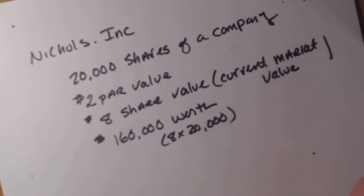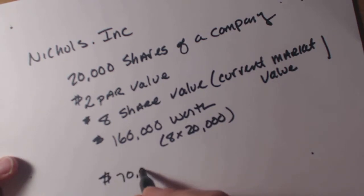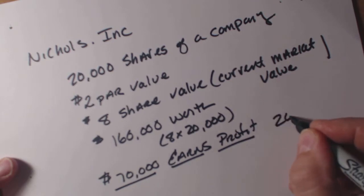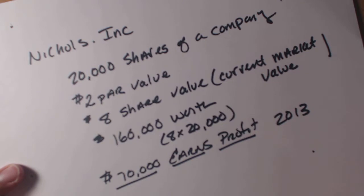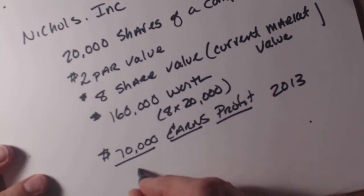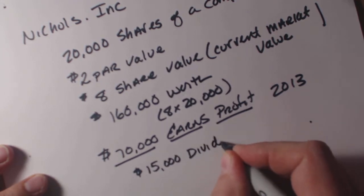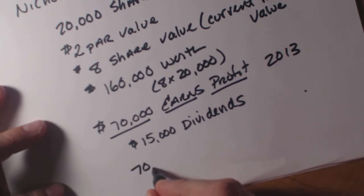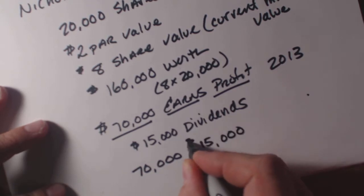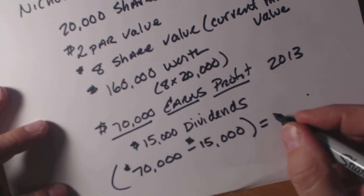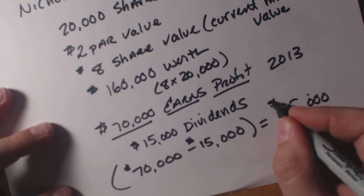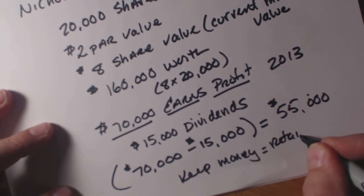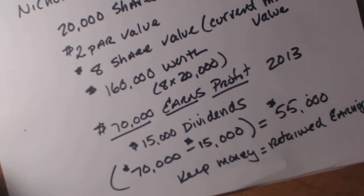The company earns $70,000 this year — that's their profit at the end of 2013. Then the owners wanted to take out $15,000 in dividends, meaning they want to take home $15,000. Since they're taking part of the profit and paying themselves, we take $15,000 out of the $70,000, which leaves us with $55,000. In accounting, when we keep money, it's called retained earnings.